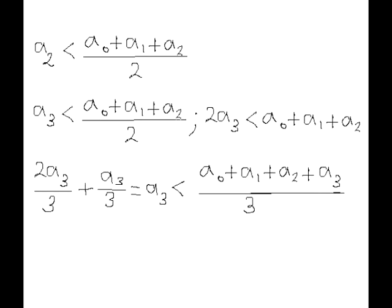Then, we must choose a4 that is also strictly less than a0 plus a1 plus a2 plus a3 divided by 3, because otherwise n equals 3 would satisfy both inequalities, and so forth.